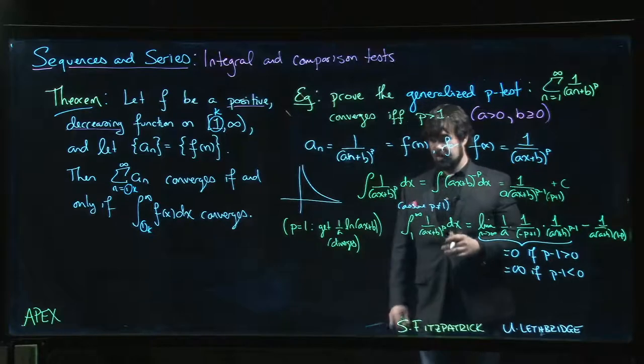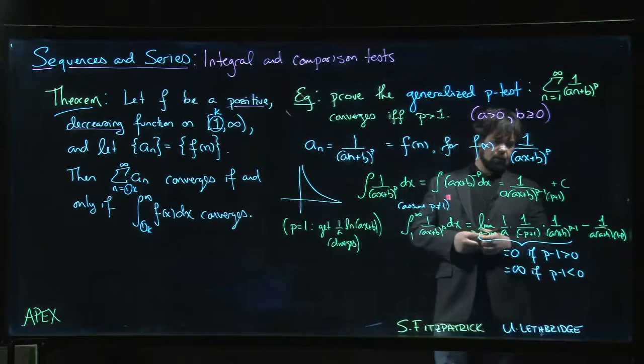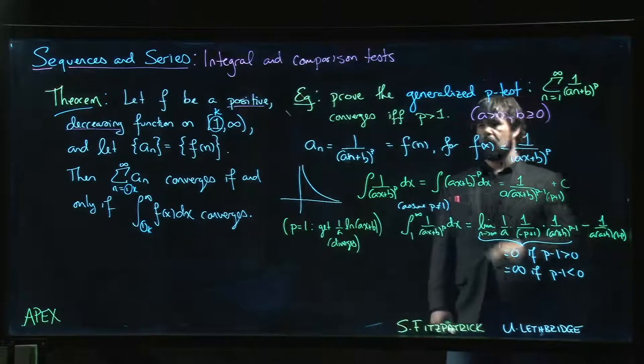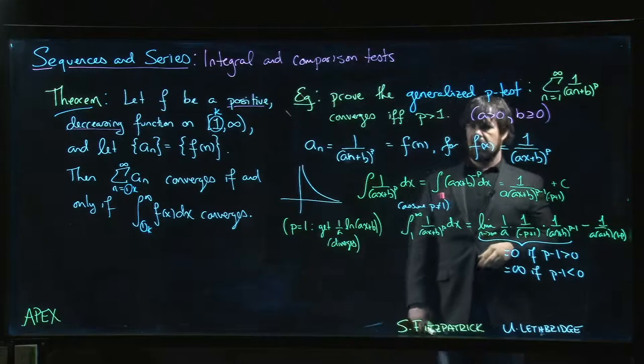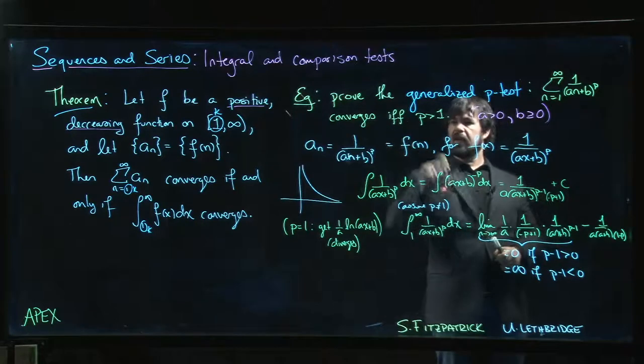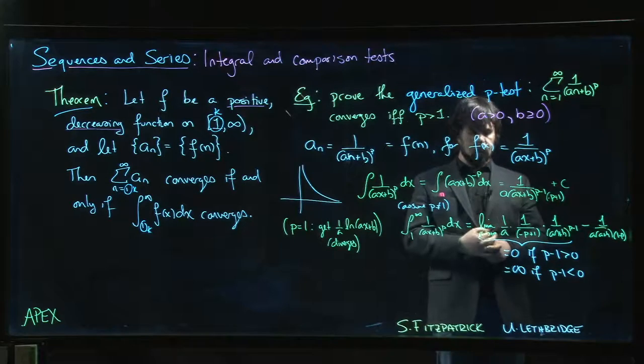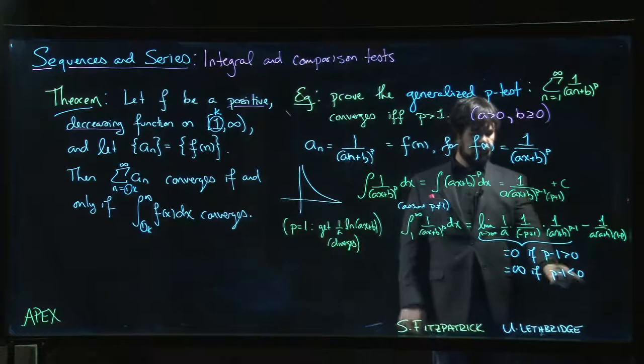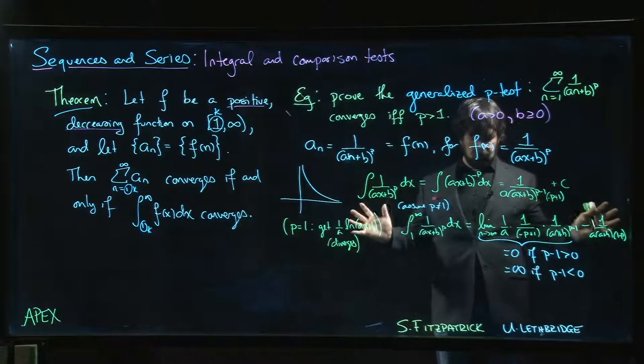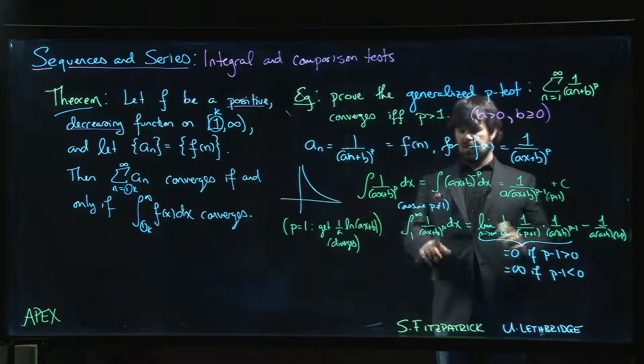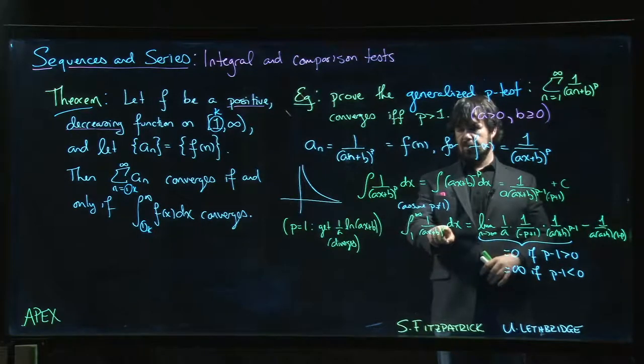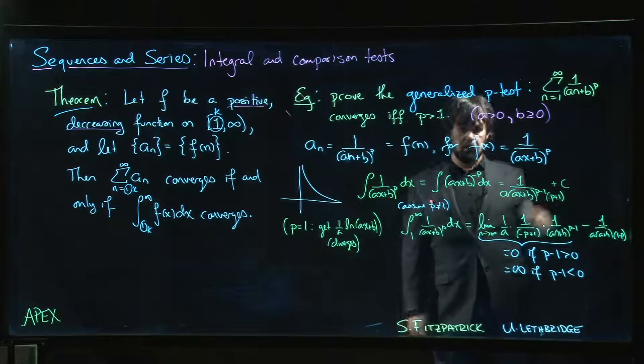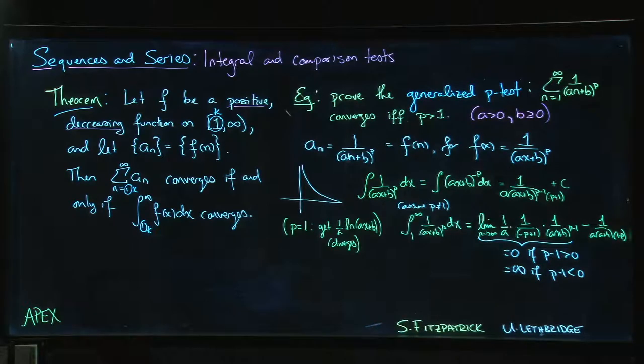So it's going to converge if (p - 1) is positive, which is the same thing as saying that p is bigger than one, which is what we had here. And if and only if, because if p is not bigger than one, then either it's equal to one and we know it diverges, or it's less than one and we know it diverges. Either way, we know that we have a convergent improper integral if p is bigger than one, and so correspondingly we have a convergent p-series if p is bigger than one.